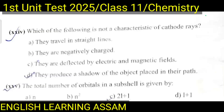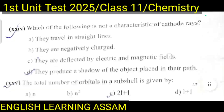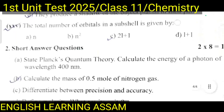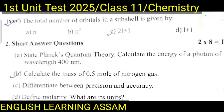Question number twenty-four: Which of the following is NOT a characteristic of cathode rays? A. They travel in a straight line. B. They are negatively charged. C. They are deflected by electric and magnetic fields. D. They produce a shadow of the object placed in their path. The correct option is D.